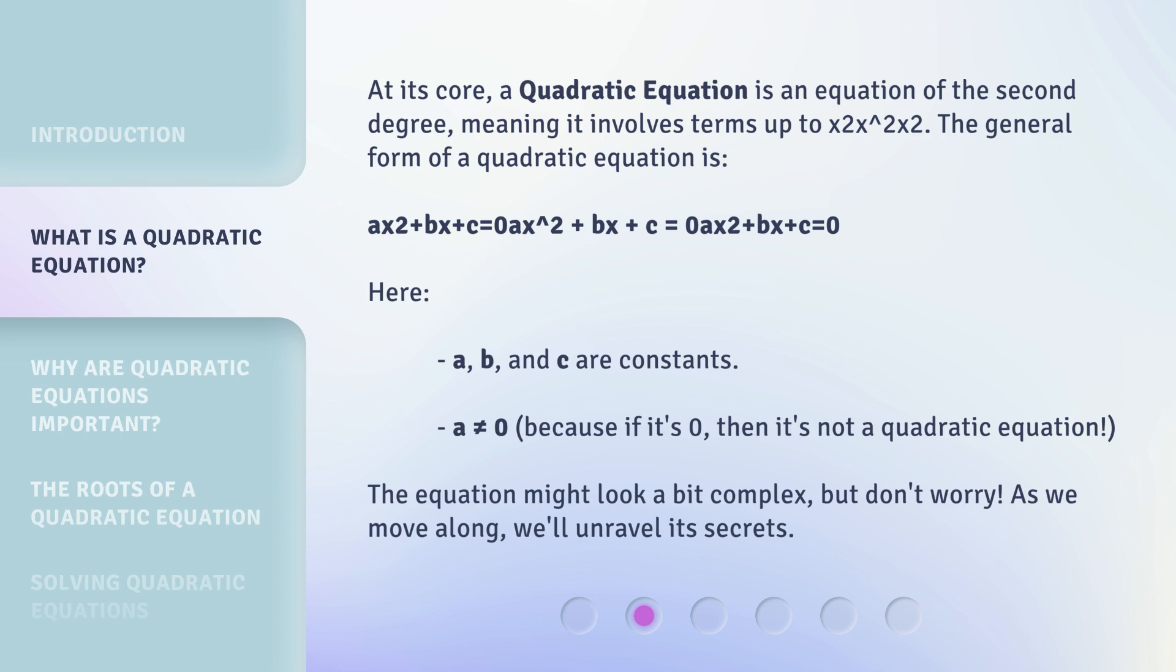a ≠ 0, because if it's 0, then it's not a quadratic equation. The equation might look a bit complex, but don't worry. As we move along, we'll unravel its secrets.